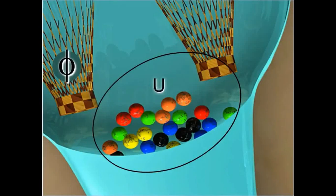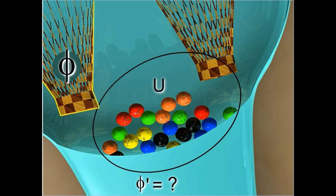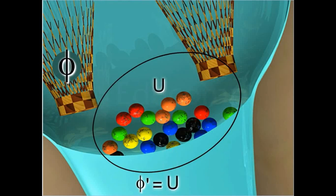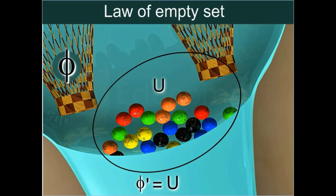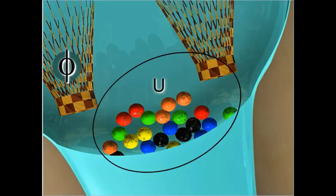Let us now check out laws of empty set and universal set. Since an empty set is a set having no element, therefore complement of an empty set is the set which contains all the elements under consideration, that is, the universal set. This is called the law of empty set. Since the universal set is the set containing all the elements under consideration, therefore the complement of universal set is an empty set.